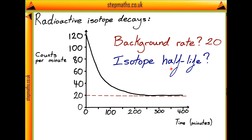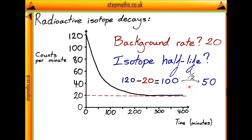Now we need to try and find the half-life of our isotope. This is the time it takes the activity of our isotope to half. One way of doing this is by looking at the initial activity of our isotope and finding out how long it takes for this to half. Looking at our graph, we see that the total initial counts being detected is 120 per minute. However, 20 of these are due to the background radiation. So initially, our isotope is going to be emitting 100 counts per minute. Therefore, to find the half-life, we should find the time when the isotope is emitting 50 counts per minute.